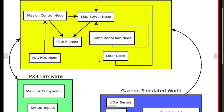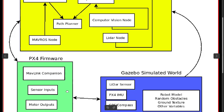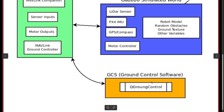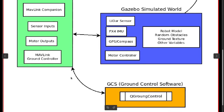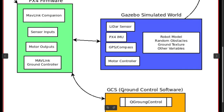Let's see the ROS graph. The main thing to focus on is the path planner and how all the nodes connect to this process. The PX4 firmware will take input from the ground control software — we can set the mission constraints through our ground control software — and it will send those constraints or information through MAVLink protocol to the MAVLink ground controller of our PX4 firmware.